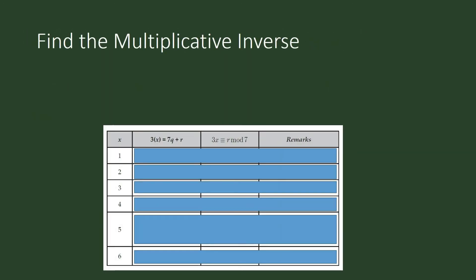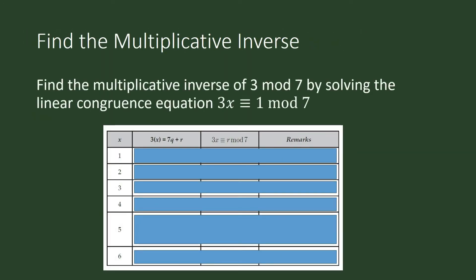Find the multiplicative inverse of 3 modulo 7. We need 3 times x congruent to 1 modulo 7. This is called a linear congruence equation — note that the congruence symbol is not an equal sign.